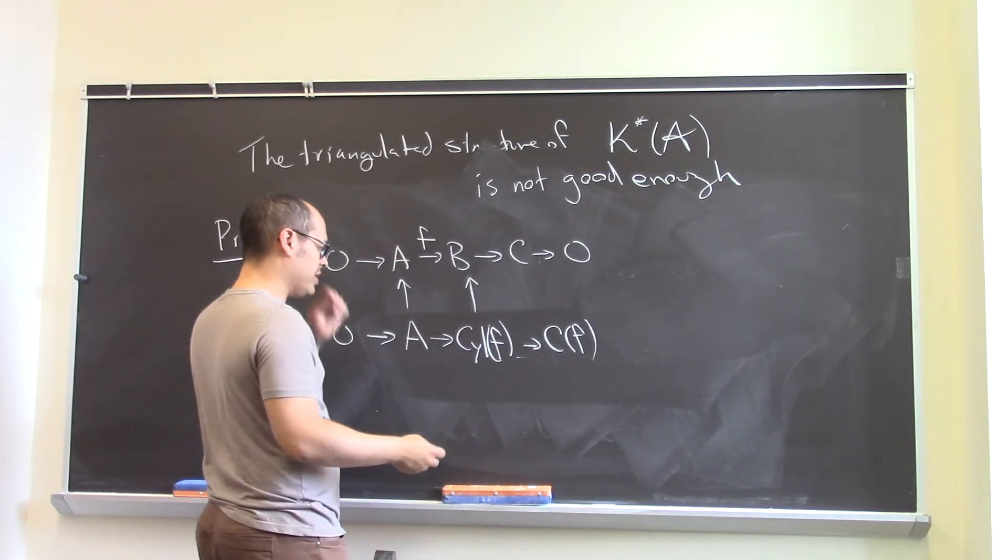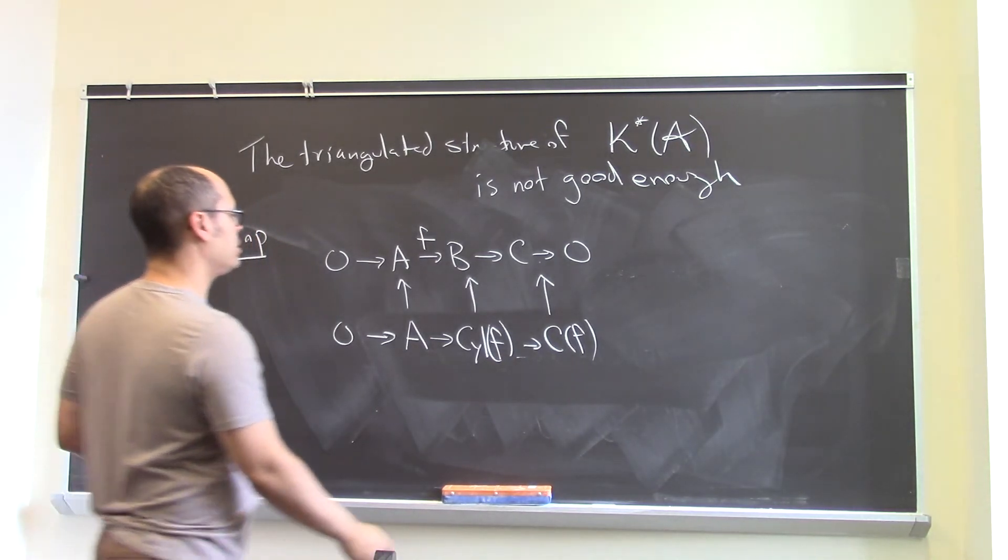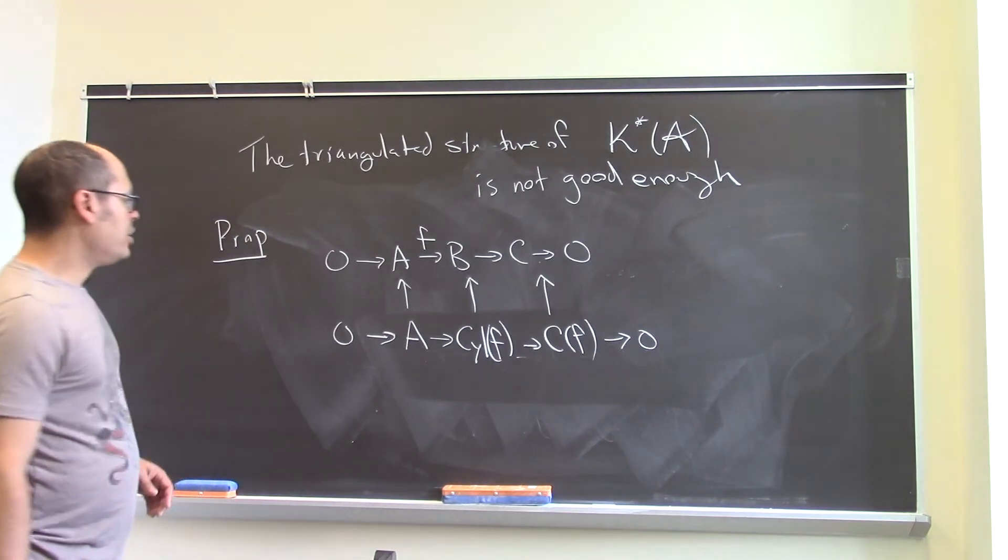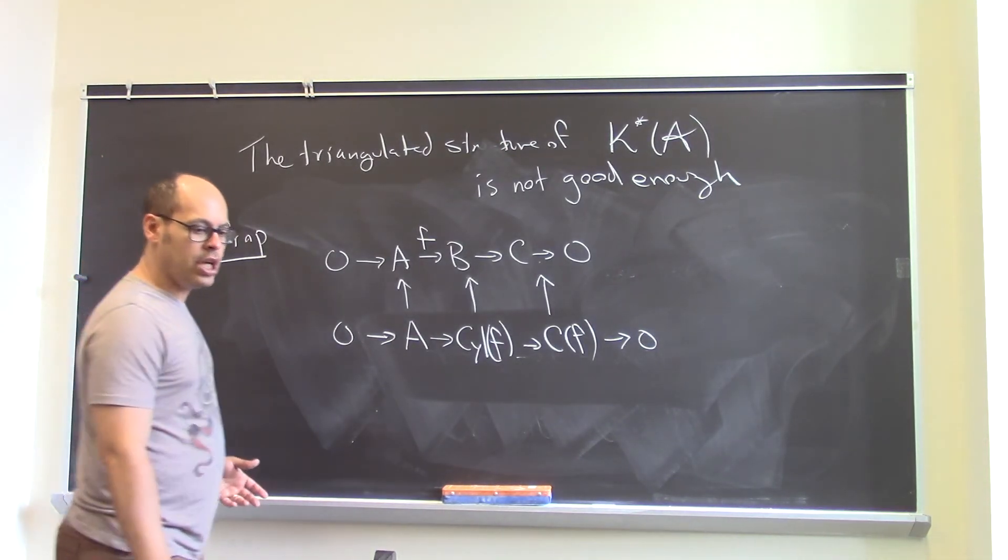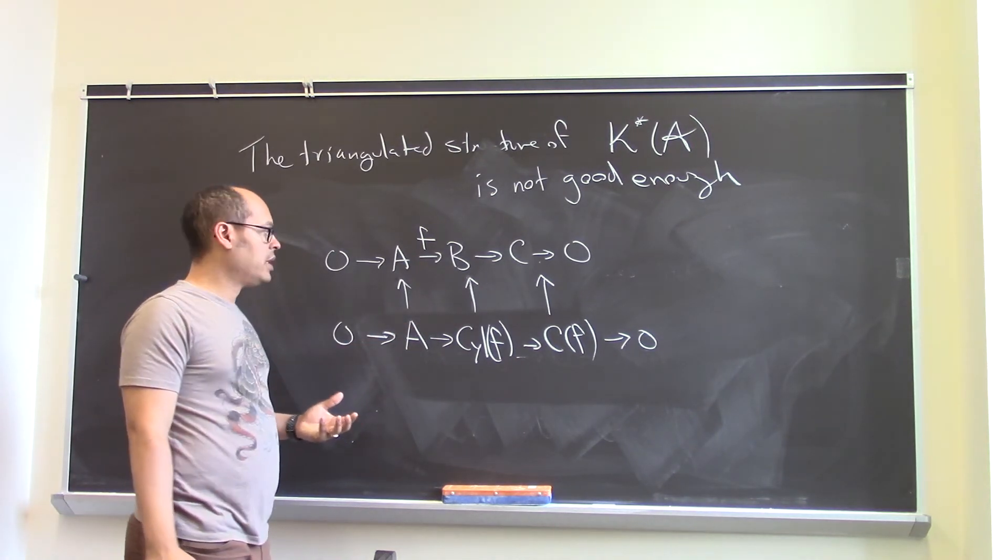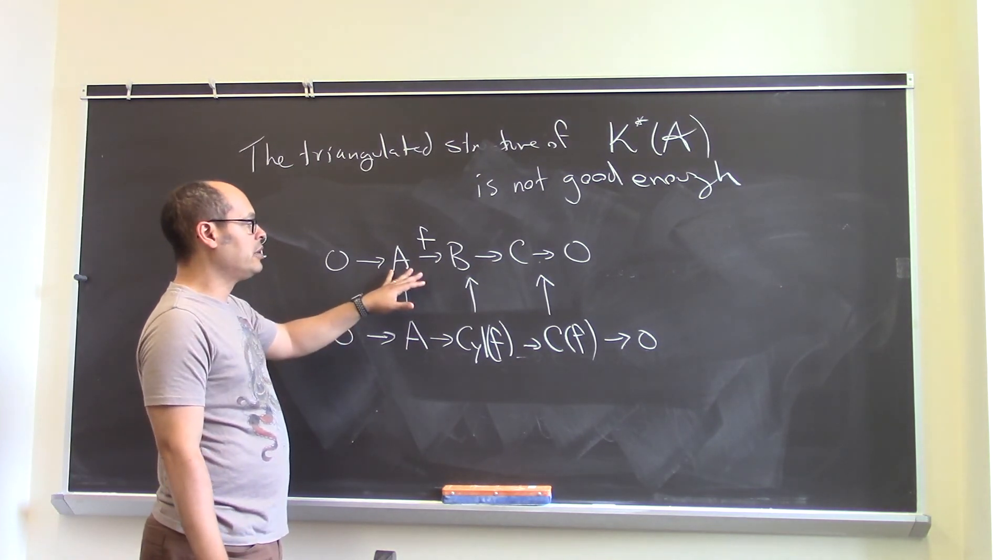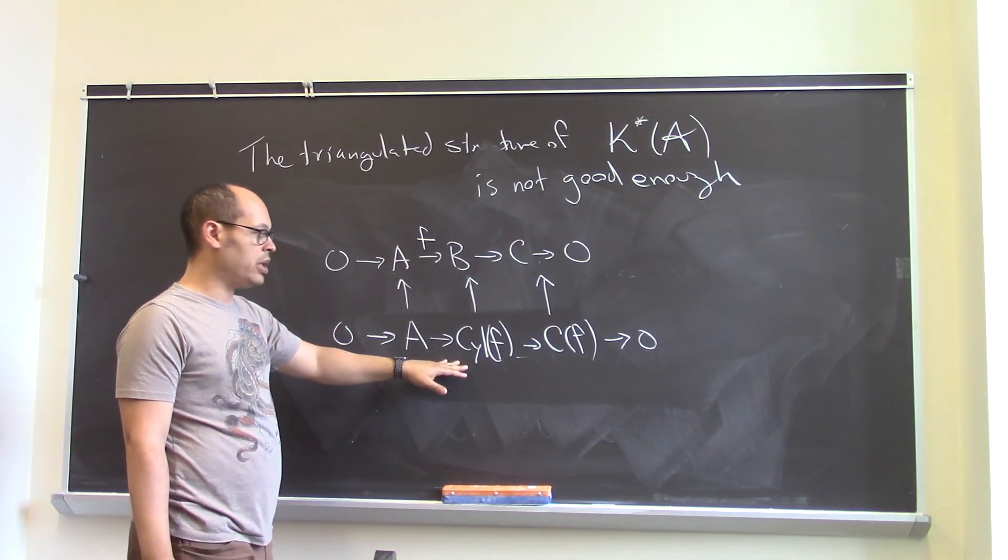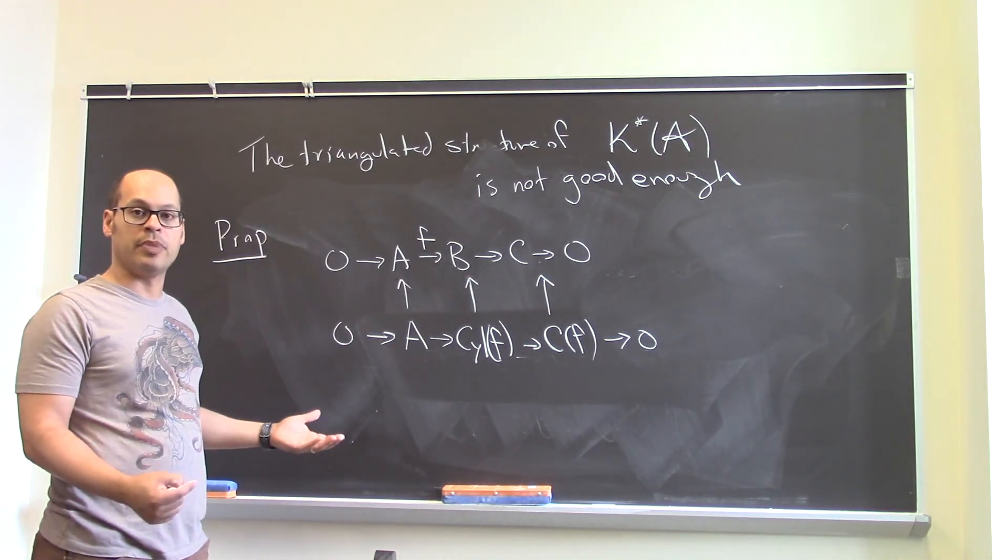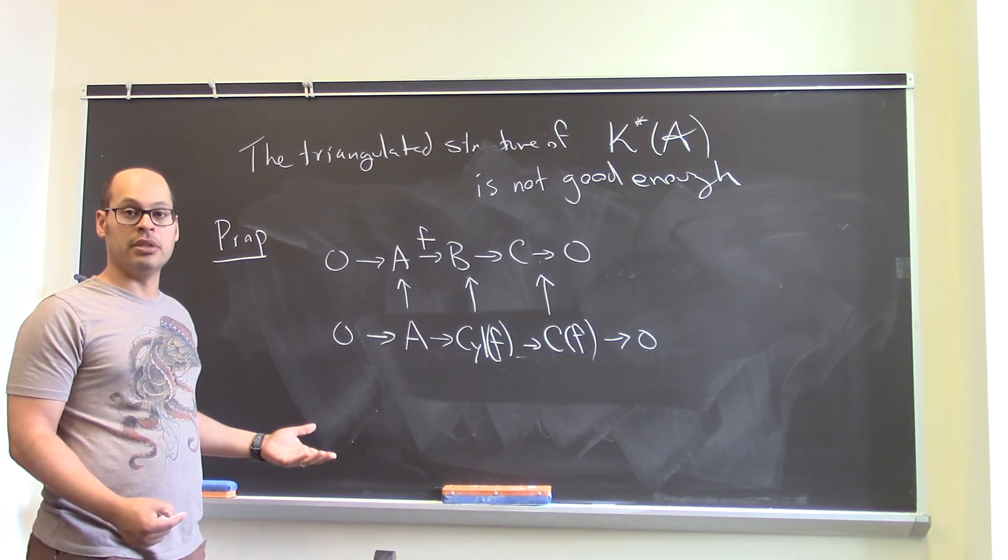You get a series of maps like this, and what you can show is that these vertical maps are, in fact, quasi-isomorphisms. Because they're quasi-isomorphisms, once you go to the derived category, you can identify this short exact sequence and this one, and therefore, every short exact sequence of chain complexes corresponds to an exact triangle in the derived category. All right.